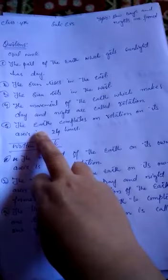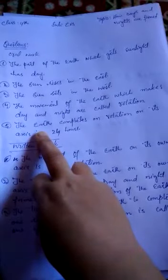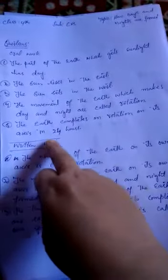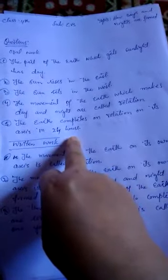How long does it take the earth to complete one rotation on its axis? The earth completes one rotation on its axis in 24 hours.